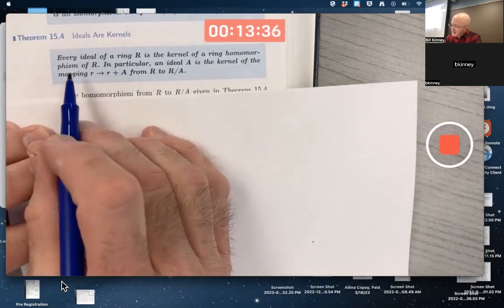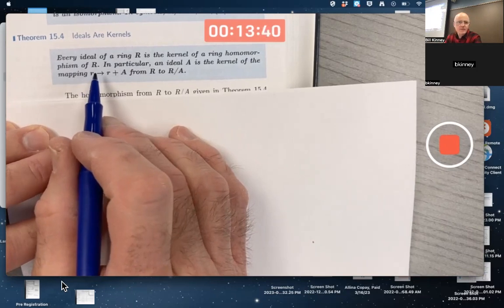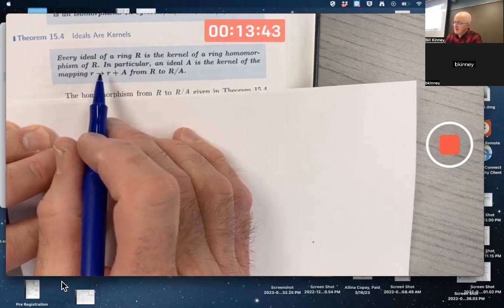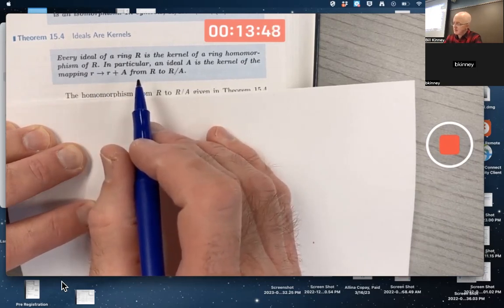This theorem says every ideal of a ring R is the kernel of a ring homomorphism of R. They could have stopped the theorem right there, but they added a second sentence to make it more clear what they're talking about and make it easier to prove.